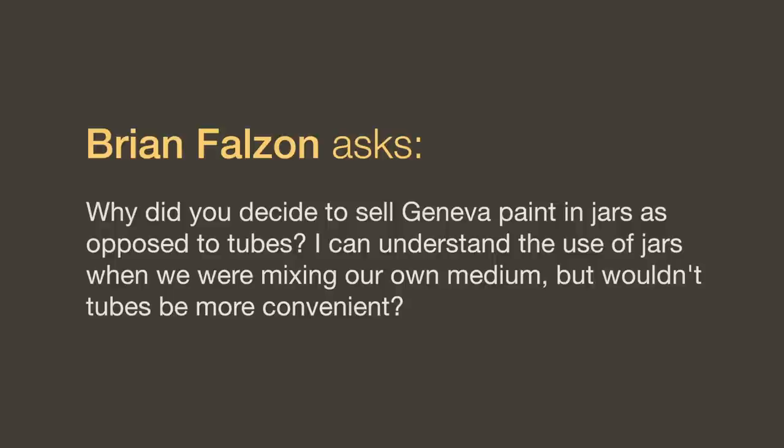Why did you decide to sell Geneva paint in jars as opposed to tubes? The reason is that when paint comes in tubes, it's normally very stiff. Even traditional paint back 30 or 40 years ago, it was more common to open a tube and have a little bit of oil flow out, because they weren't putting all the stabilizers in it that they do now. With the Geneva paint, we don't put anything in it specifically to keep the oil from separating out, because it adversely affects the handling properties. If we put it in tubes, you wouldn't be able to stir it up before use, and you would squeeze it out and the oil would run everywhere. That's why we put it in jars.